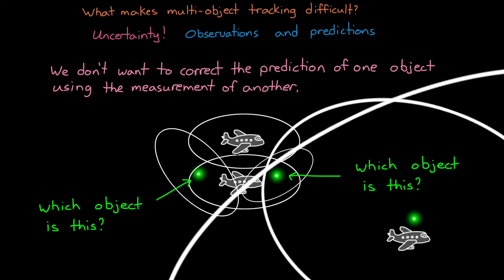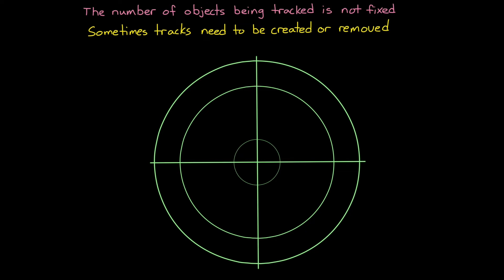Alright, so that's one problem. But another thing we need to consider is that the number of objects being tracked is not fixed. Sometimes, tracks need to be created, or removed based on what we observe. We may add a new track when an airplane flies into the radar range. And similarly, we may delete a track when one flies out.